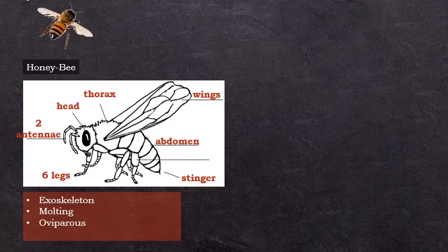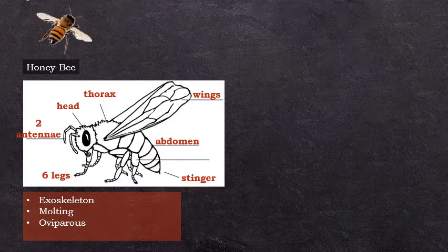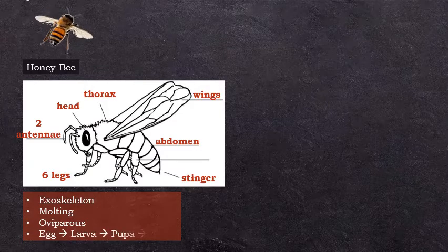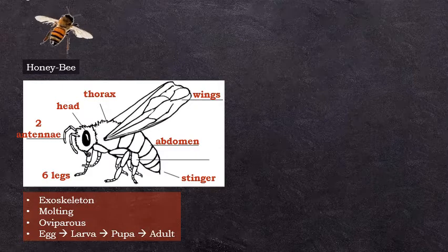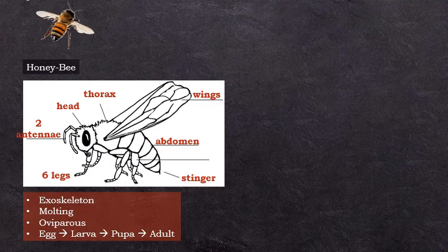Insects are oviparous animals. They lay eggs on the plant's leaves. A larva hatches out of the egg. It grows into a pupa and then into an adult.